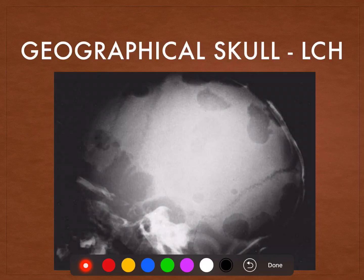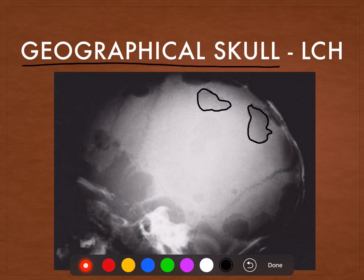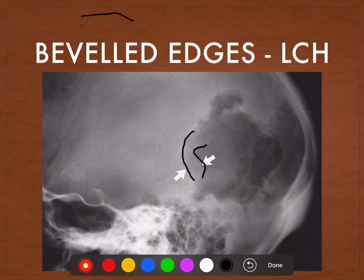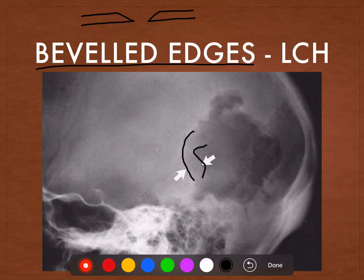In the next image, we see these well-defined lytic lesions seen in the skull of a young patient, and these lesions look like that somebody has drawn a map on the skull. This skull is known as the geographical skull and it is characteristic for Langerhans cell histiocytosis. If you zoom in on one of these lesions, we see two edges — this is because of the beveled edge, meaning there is unequal involvement of the outer and the inner table of the skull. This beveled edge appearance is again characteristic of Langerhans cell histiocytosis.